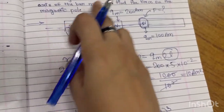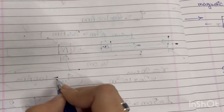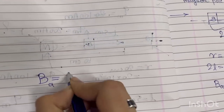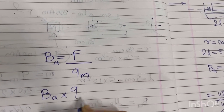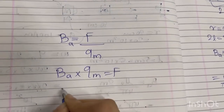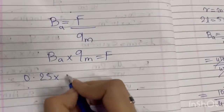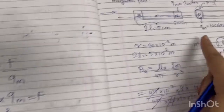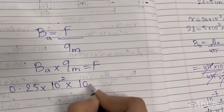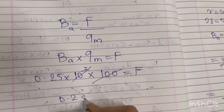Now, due to this axial magnetic field, what will be the force on this pole? The formula is force = magnetic field × pole strength. So the axial magnetic field 0.25 × 10⁻³ multiplied by the pole strength of this magnetic pole, which is 100, gives the force.